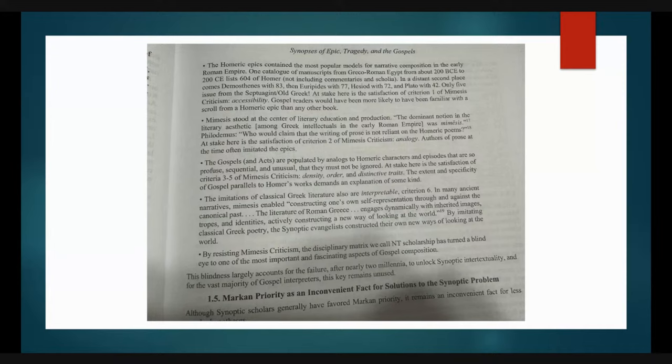The Homeric epics were the most popular models for narrative composition in the early Roman Empire. One catalog of manuscripts from Greco-Roman Egypt, from about 200 BCE to 200 CE, lists 604 of Homer, not including commentaries. In a distant second place comes Demosthenes with 83, then Euripides with 77, Hesiod with 72, and Plato with 42. Only five issue from the Septuagint and Old Greek. At stake here is the satisfaction of criterion one of Mimesis criticism: accessibility.